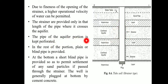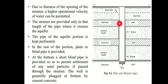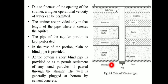The portion of the pipe outside the aquifer is kept as a blind pipe. At the bottom, a short blind pipe is provided so as to permit settlement of any sand particles that pass through the strainer. The well is generally plugged at the bottom by cement concrete.